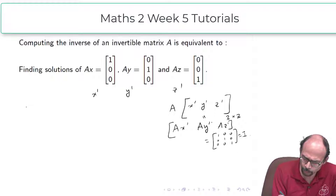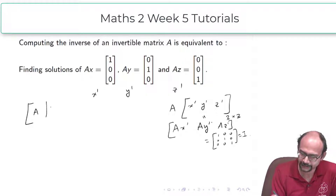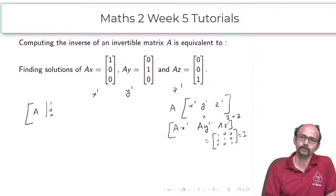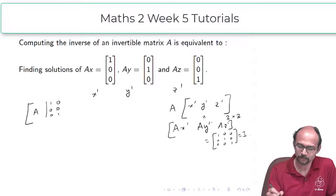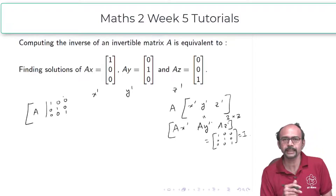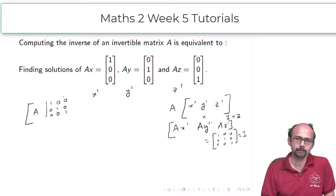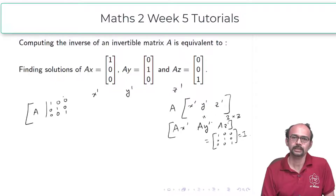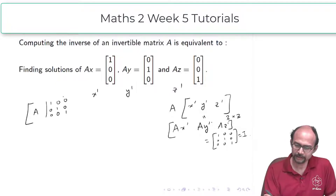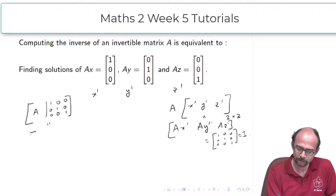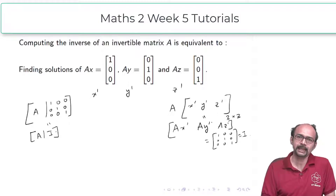I want to show you the algorithm for doing this. Instead of solving one column at a time, I take all three columns together. Since the procedure is the same — applying elementary row operations to reduce A to reduced row echelon form — I take a much bigger augmented matrix: I take A and augment all three columns, which is 1 0 0, 0 1 0, and 0 0 1. So I essentially put A and I beside each other, then reduce.